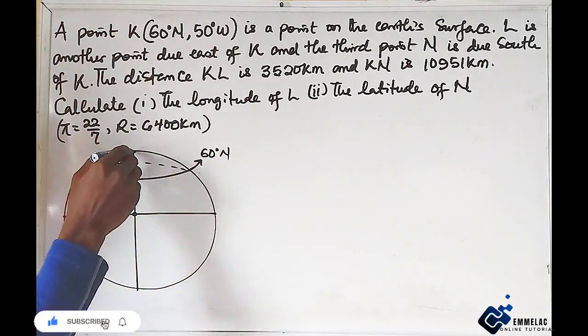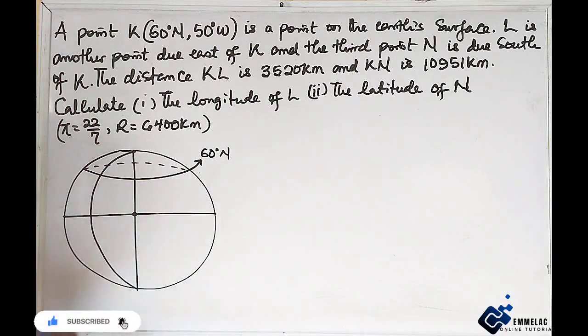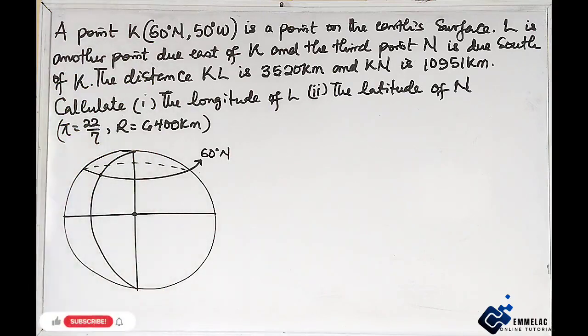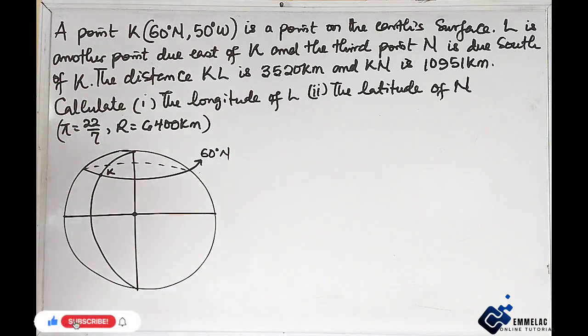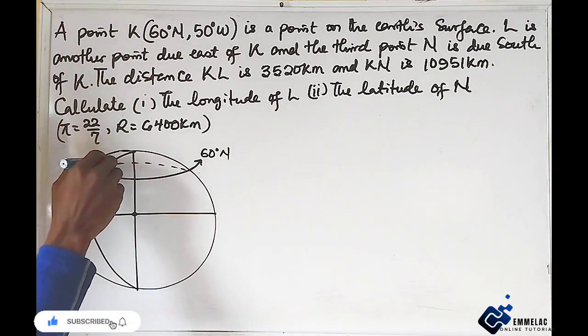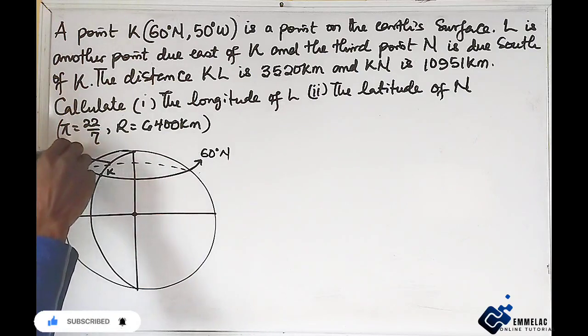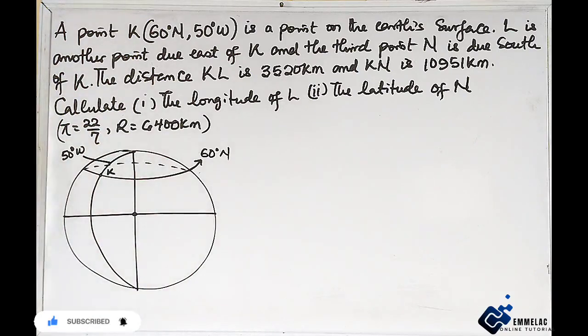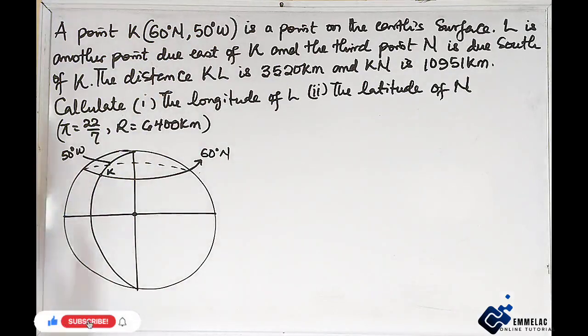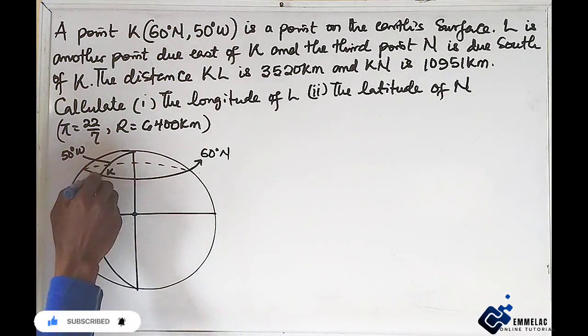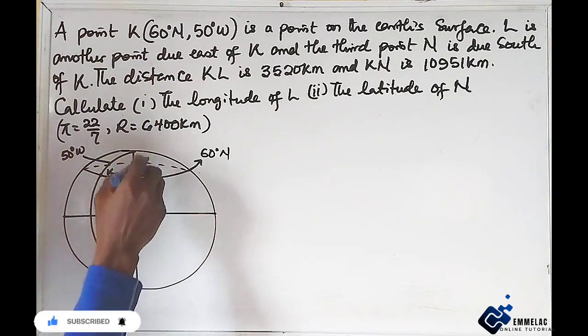Our longitude 50. So at this point, where they intercept both the latitude and the longitude, is the location for K. This is our latitude 50 degree west. We are told that L is at that point due east of K. Due east, now take note this is the west and this is the east, so it all goes to this direction. Here. This is L.